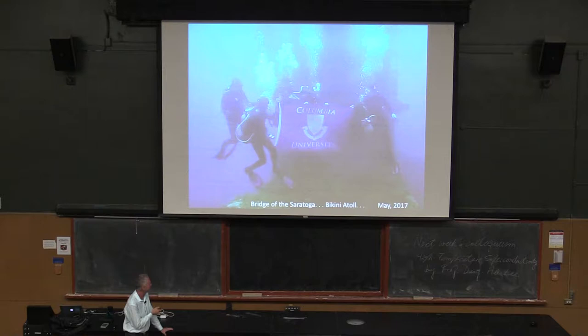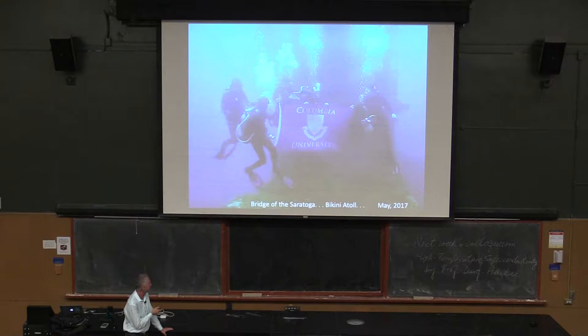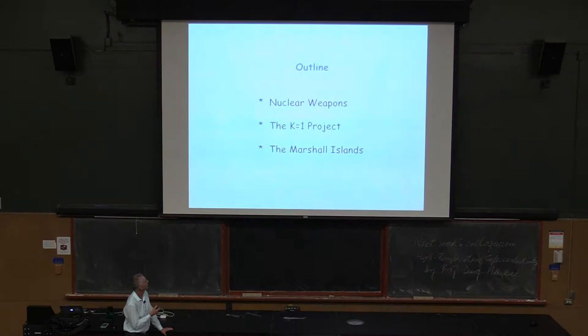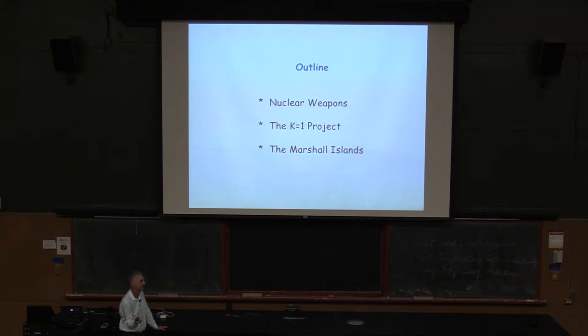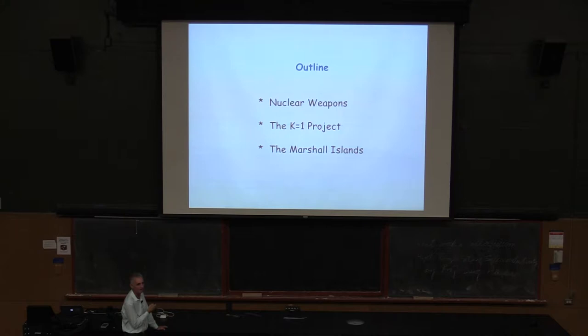I will get to why I'm showing the bridge of the Saratoga at Bikini Atoll. Here's an outline of my talk — it's really three topics. I want to spend the beginning just talking about general things on nuclear weapons. Then I'm going to talk about the K-1 project and say what this is — nobody knows what it is. And then the main part of my talk is the work we're doing in the Marshall Islands.